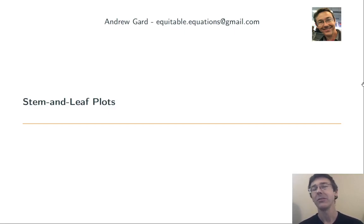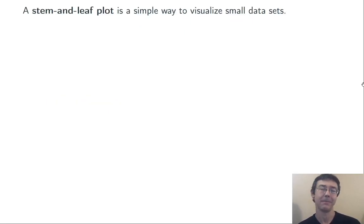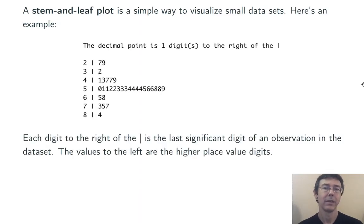Hey everybody. Today we're talking about stem and leaf plots. A stem and leaf plot is a simple way to visualize a single variable distribution, and they're particularly well suited to small data sets because they're displays that preserve all of the information in that data set. There's no information lost when you go from the data to the visualization. The easiest way to explain them is just by having some examples, so let's jump right in.